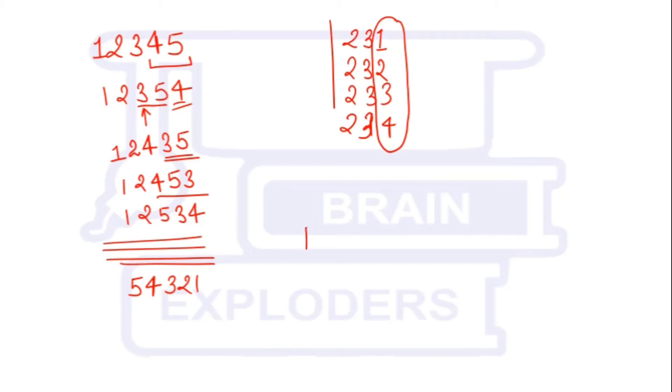If we have a number like 123654, then obviously we cannot write the next permutation using only last three digits. Why? Because here it is written in ascending order if we see from right to left, and descending order if we see from left to right. So to write the next permutation of this number, we will have to use these last four digits.